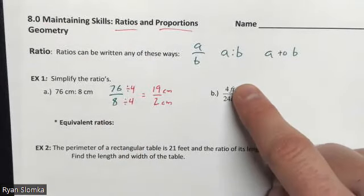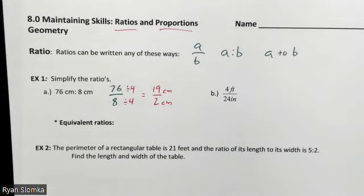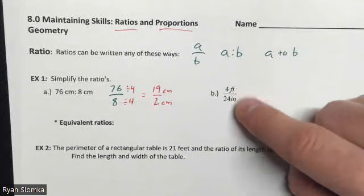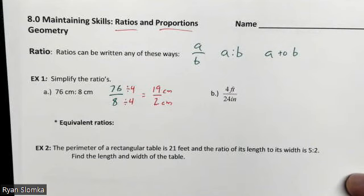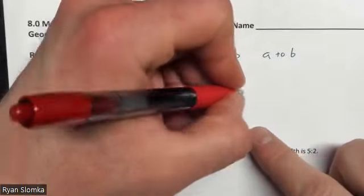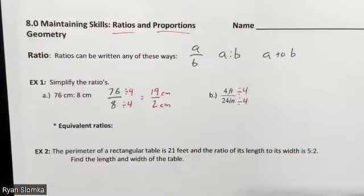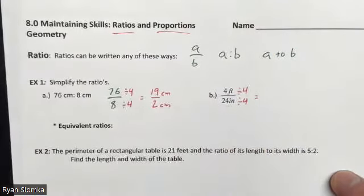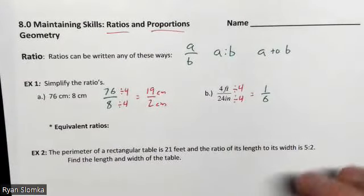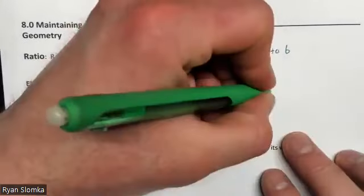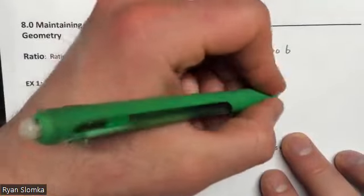Our second ratio is already written as a fraction. Notice the units are mixed — 4 feet on top and 24 inches on bottom. Having consistent units is nice but not required for a ratio, so we don't need to convert. We can just reduce. The best common factor for 4 and 24 is 4 itself, so we divide both to get 1 over 6. Including units is particularly crucial here: 1 foot to 6 inches.